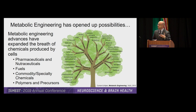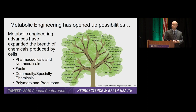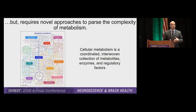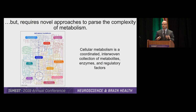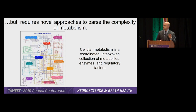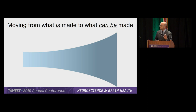However, just adding a certain number of reaction steps into the cell is not sufficient for producing a product. We have to go through a rather large, complex network — an inherently intercoordinated, woven network that is a bio-optimization problem. How do we parse ourselves through this complexity of metabolism to generate a process that's efficient? If we're successful, we can actually move from what is produced in a cell to what can be made by a cell.